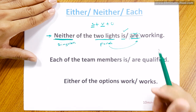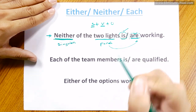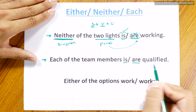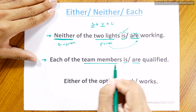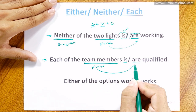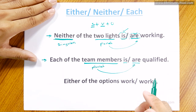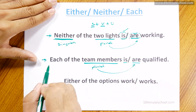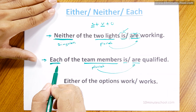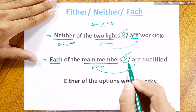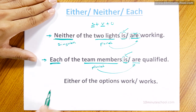Each of the team members is qualified. The subject 'each' is singular, so the verb 'is' is correct.